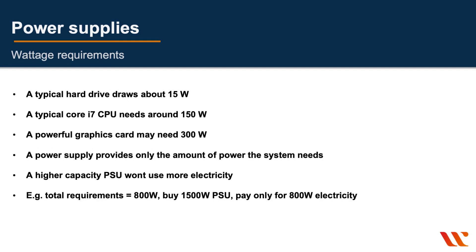A typical hard drive needs about 15 watts, a CPU might need 150 watts, and a graphics card might need 300 watts. Your PSU must cover all these devices and leave room for future expansions. Buying a higher-capacity PSU doesn't mean your electricity bill will be higher — if you buy a 1500-watt PSU but your total component requirements add up to 800 watts, you'll only be billed for the 800 watts you actually consume.